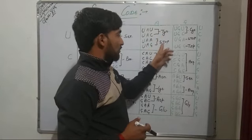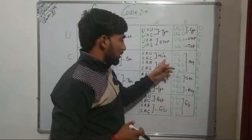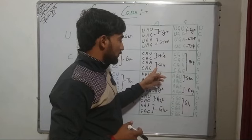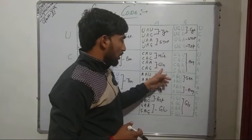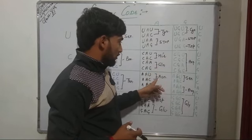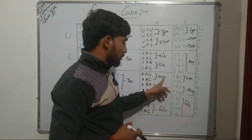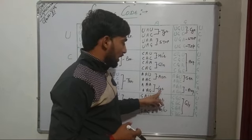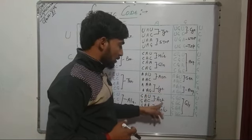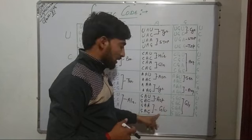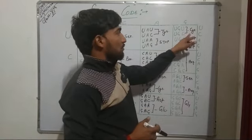Here we have PYR for tyrosine. Then we have the stop codon. HIS for histidine. GLN for glutamine. ASN for asparagine. LYS for lysine. ASP for aspartate. And GLU for glutamate.